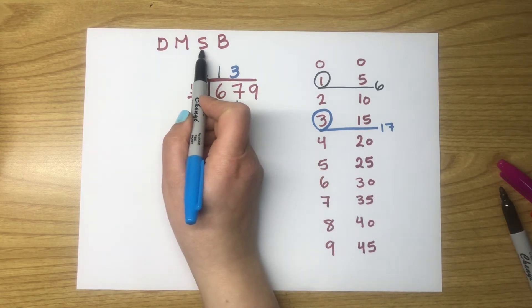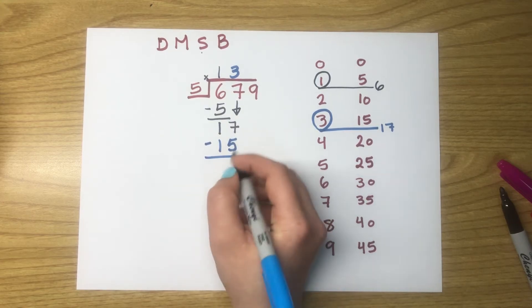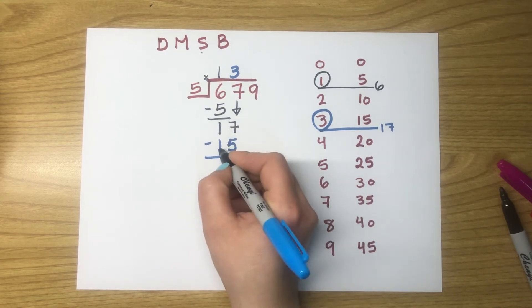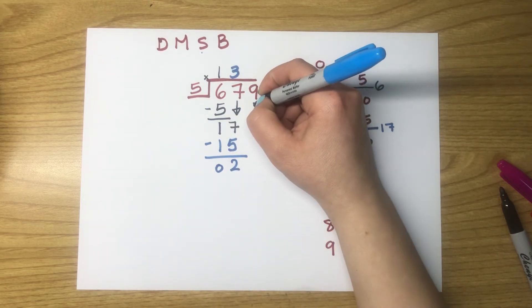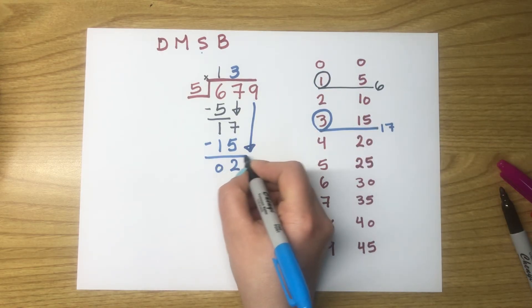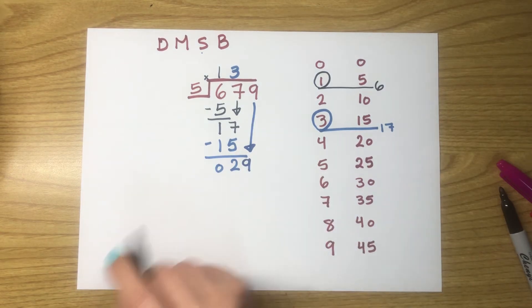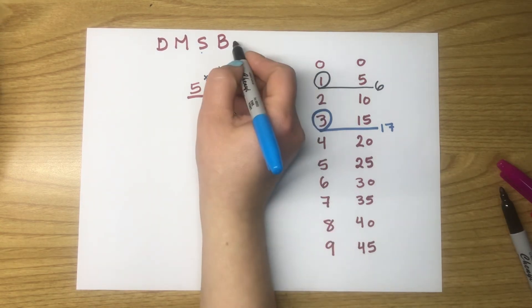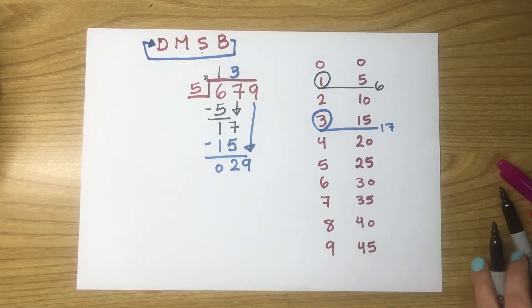Now, it's time to subtract again. 7 take away 5 is 2. 1 take away 1 is 0. Now, we have to bring down the next digit. The 9 goes down with an arrow. Reaches the subtraction line beside the 2. Now we got 29. And we are going back again to the first step of long division.